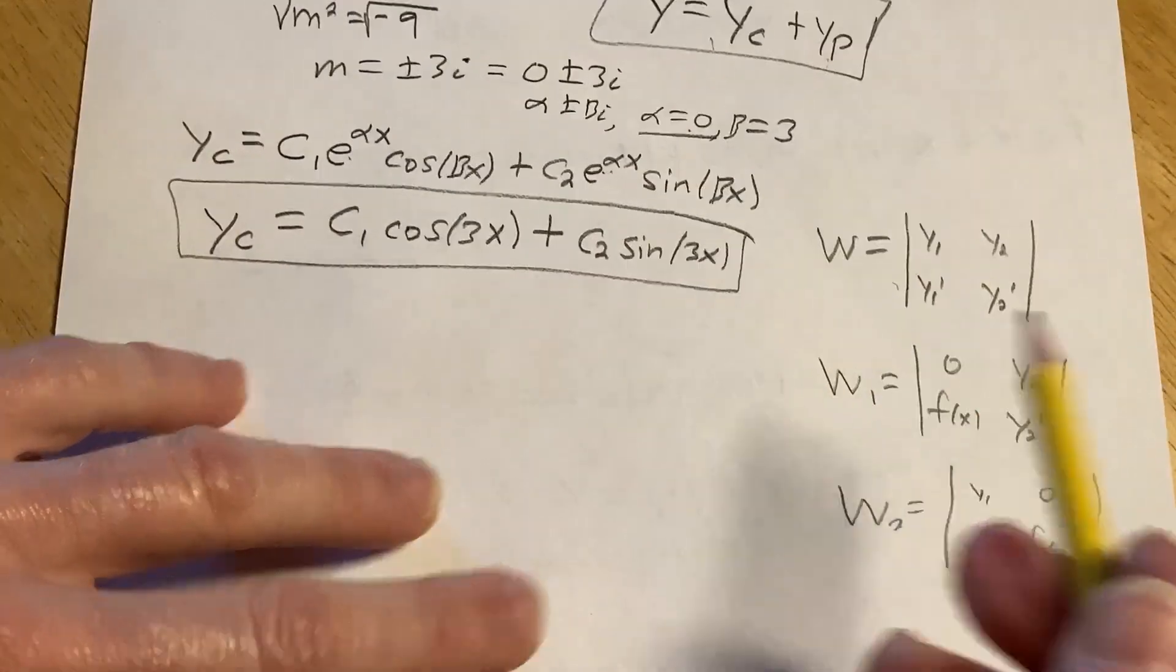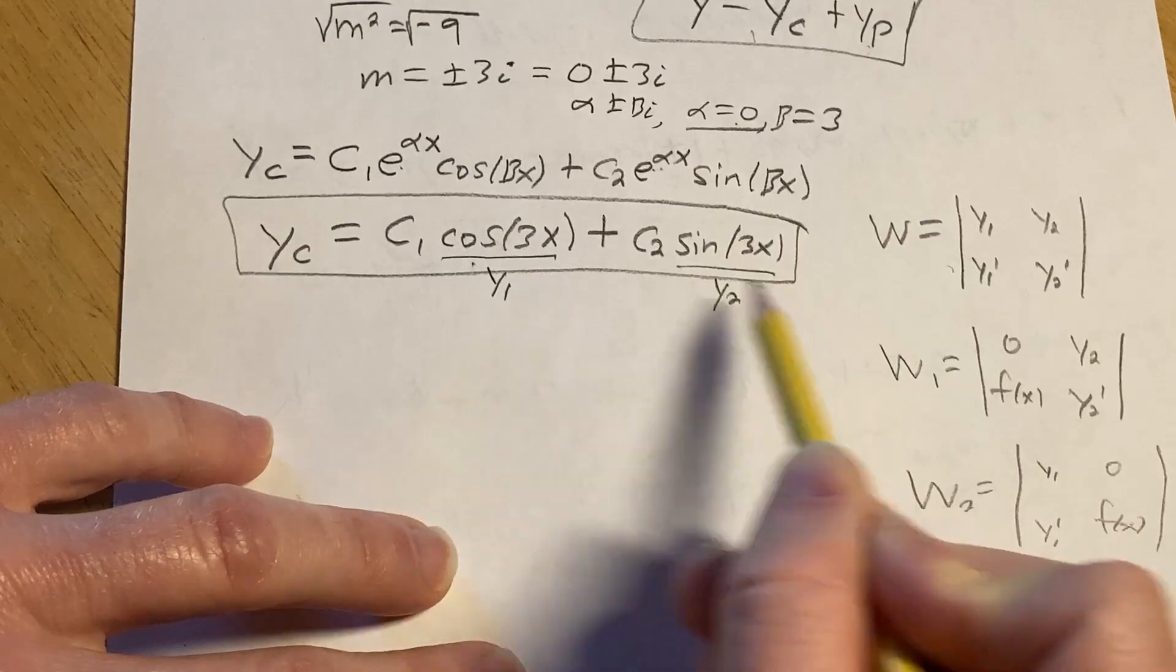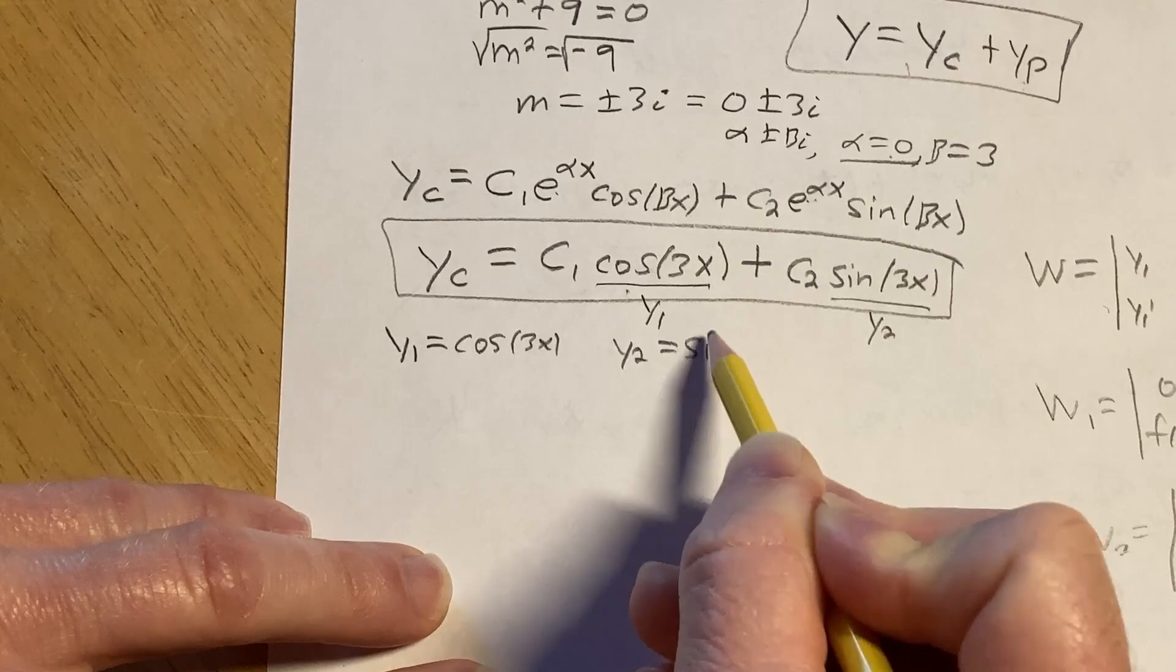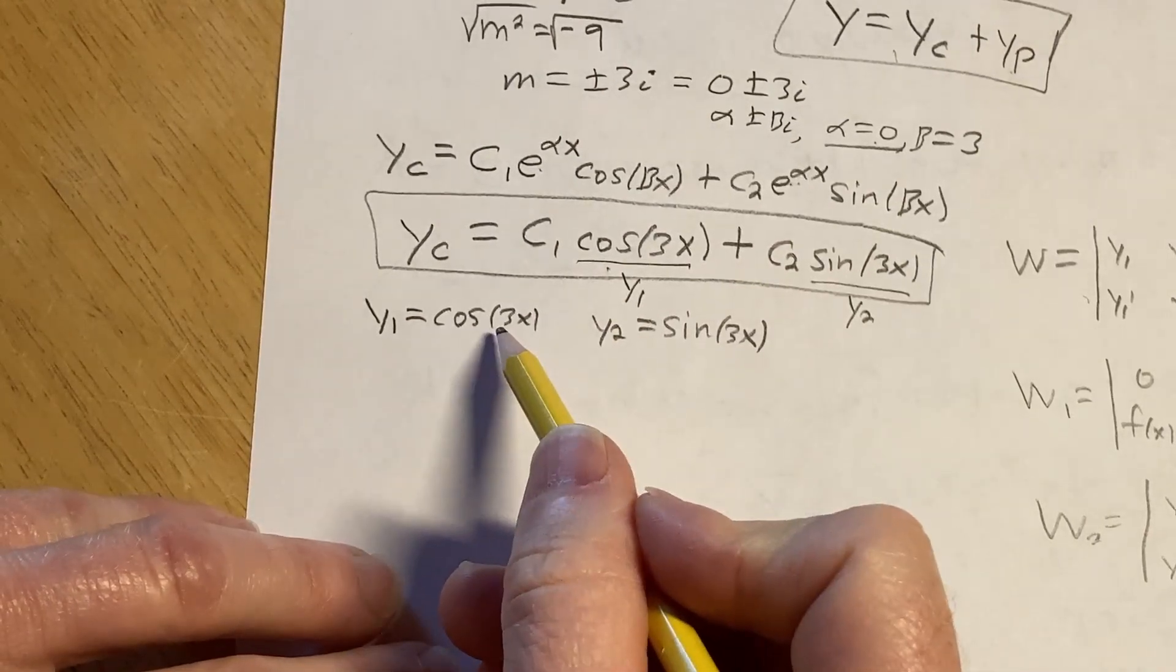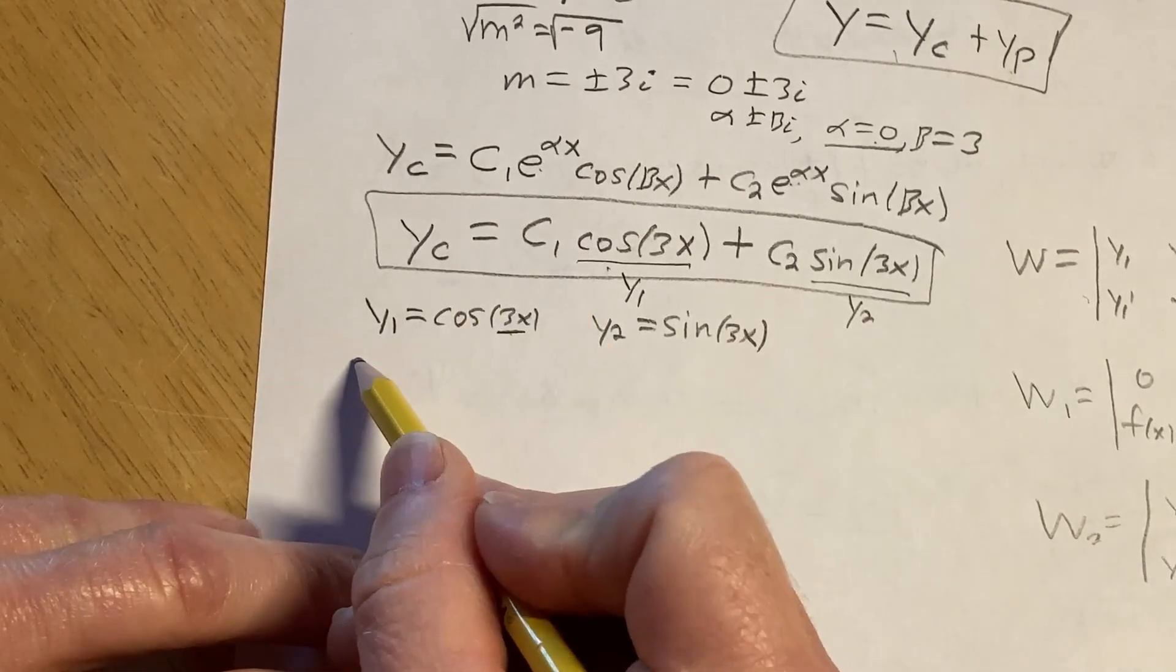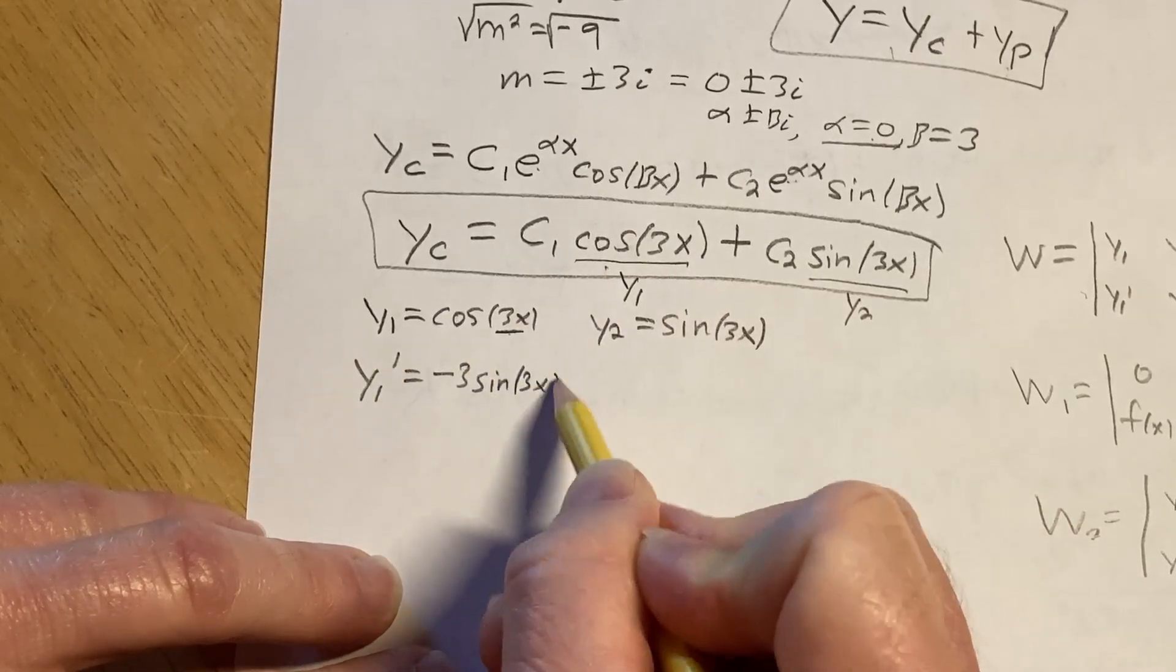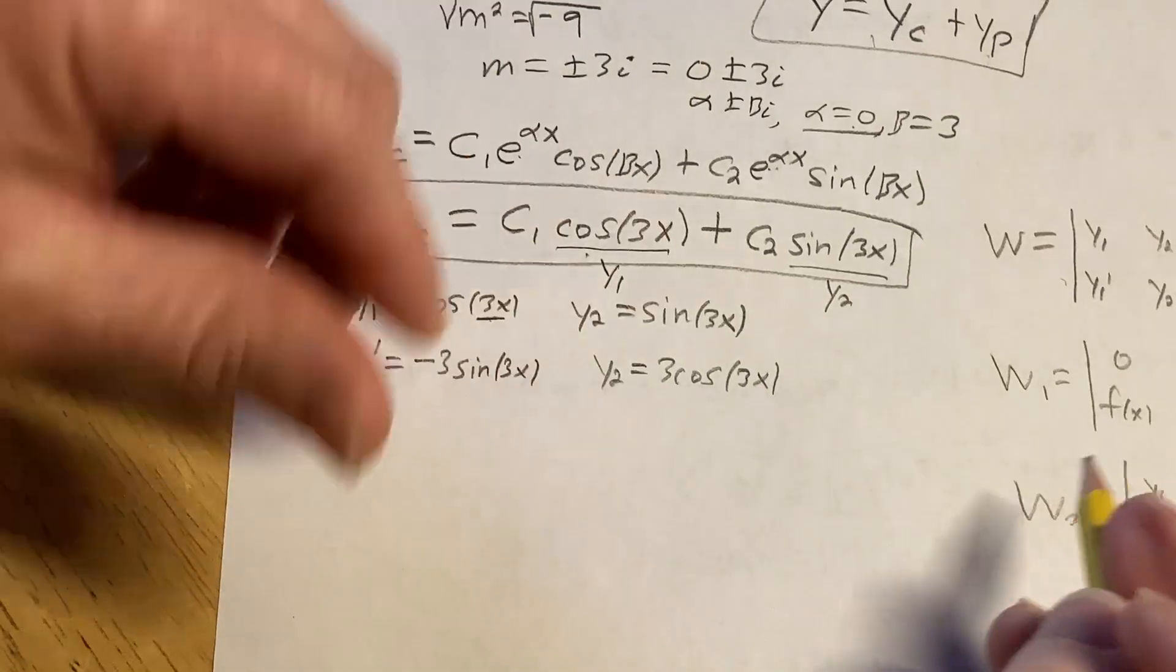So y sub 1 and y sub 2 are basically whatever we decide to want to be. Since this one comes first, we're going to call this one y sub 1, and we'll call this one y sub 2. So y sub 1 is cosine 3x. Y sub 2 is sine 3x. You can see from our formulas that we need the derivatives. So y sub 1 prime is going to be negative 3 sine 3x. Y sub 2 prime is 3 cosine 3x. So you have to know some pretty solid calculus to understand this.